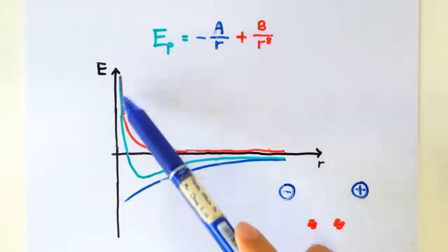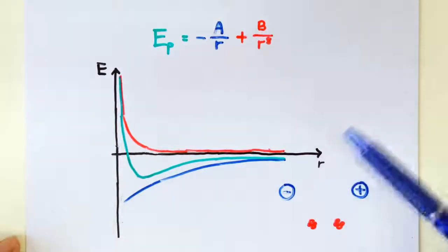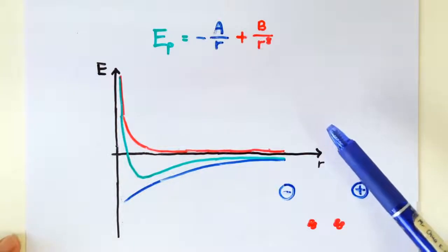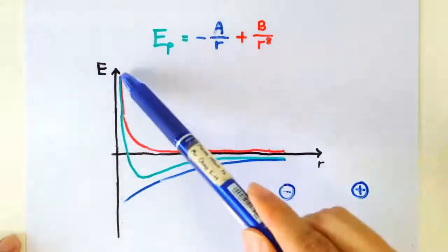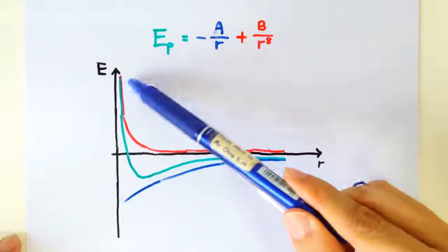And now we have the red line here. So when the two ions are far apart, the attractive force dominates over the repulsive force. So the resultant EPE is mainly due to the blue line. But when the two ions are very close together, the repulsive force dominates over the attractive force. The red line dominates over the blue line, and the resultant is actually largely due to the red line here.